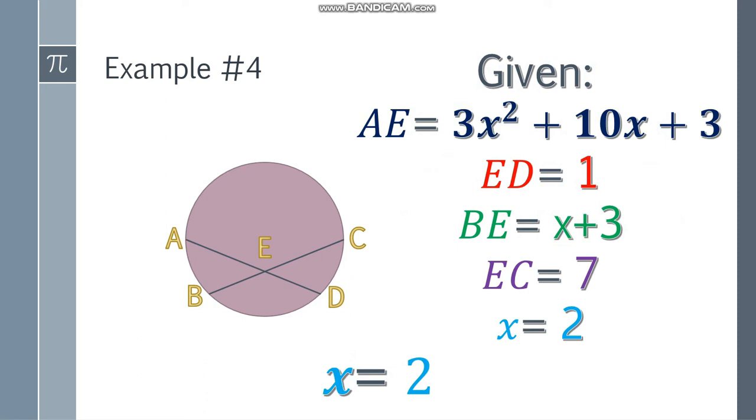So just to check if our answer is correct, we substitute 2 to this one. So 2² is 4 times 3, that will be 12. And 2 times 10 is 20, so that will be 20 plus 3. And that will be 35. Now, this 2, we will also substitute it to this one. So 2 + 3 is equal to 5. So we have 35 here in AE, and ED is 1, and EC is 7, and the value of BE is 5.